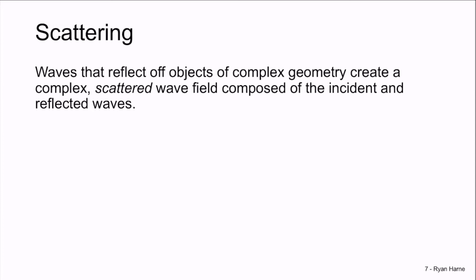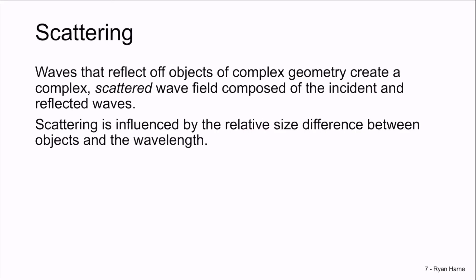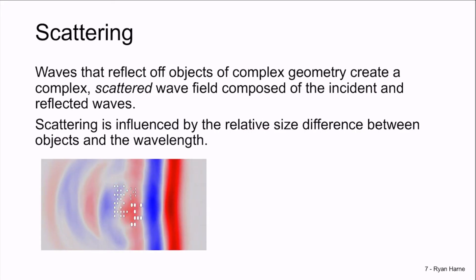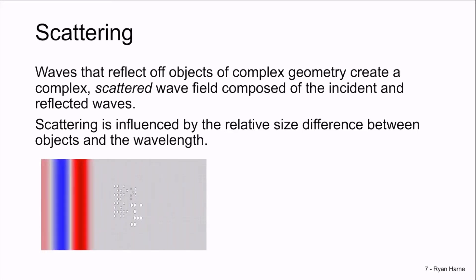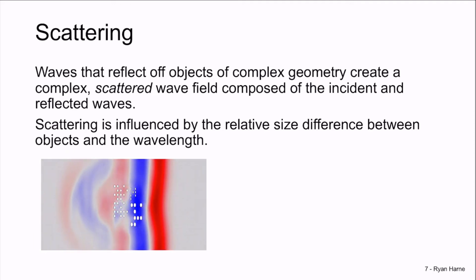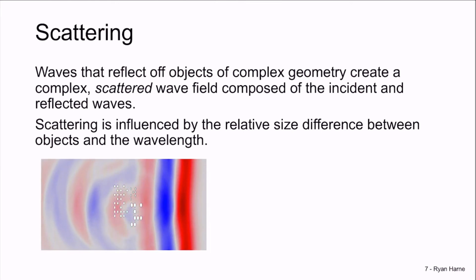Waves also scatter. Scattering occurs when a wave is incident on a complex geometry object. And the scattered field is a combination of incident and the reflected waves all at once. What scattering looks like is due to the relative size difference between the objects and the wavelength. In the video on the left, the wavelength is large with respect to the scatterer shapes, or the collective scatterer geometry. In that case, the reflected wave is quite organized, something like a spherical wave itself.